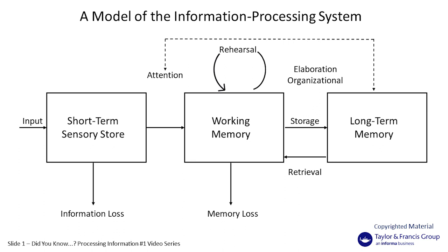Multiple things can happen in working memory. We can keep things there. We can also start transferring things into long-term memory, or they may go into memory loss. And then finally, as you can see on the right-hand side, is long-term memory — the indefinite and infinite store that we have for information.